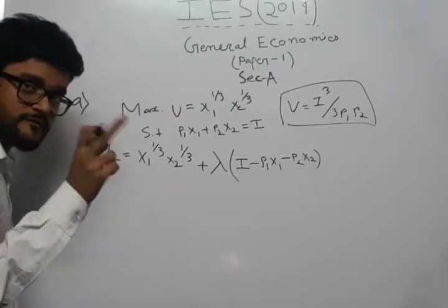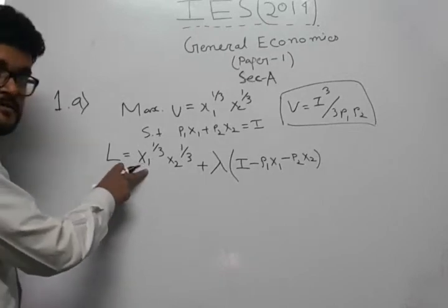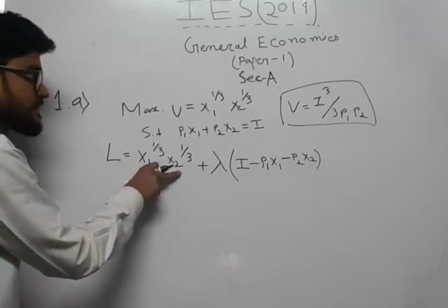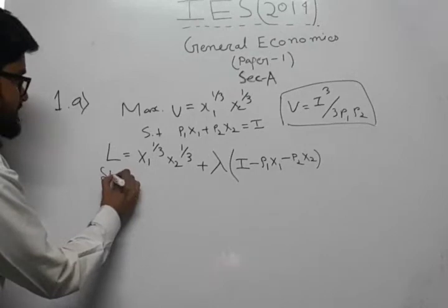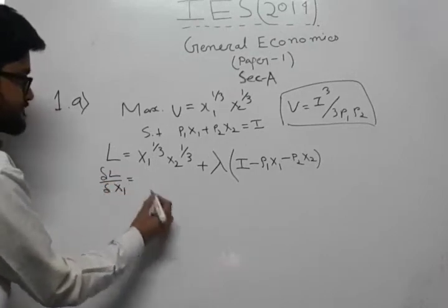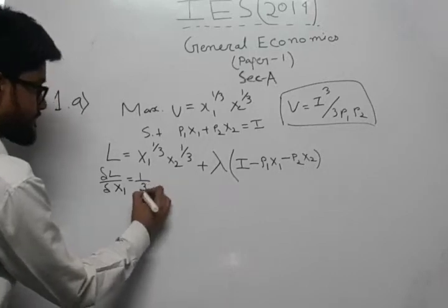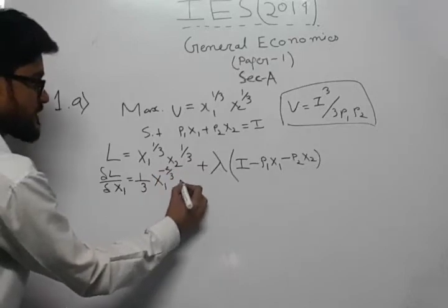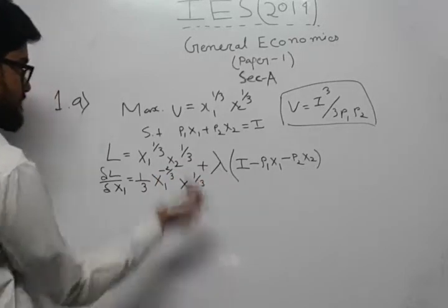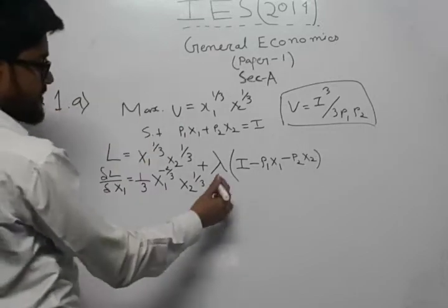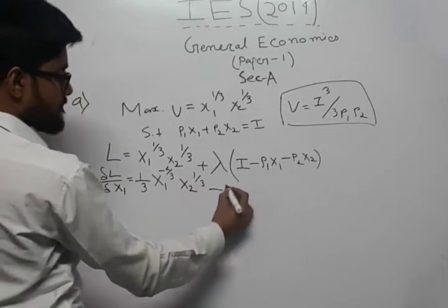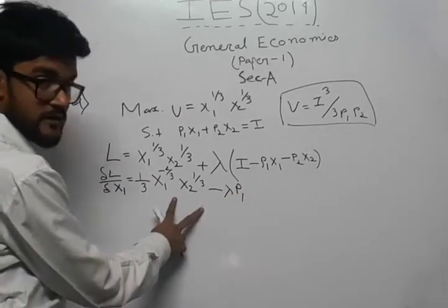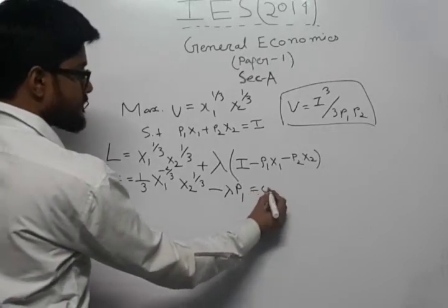Now we differentiate this Lagrange function, first with respect to x1, then with respect to x2. Differentiating with respect to x1, we get: (1/3)·x1 to the power minus 2 by 3 times x2 to the power 1 by 3, minus lambda·p1. Given the assumption of interior solution, this equals zero.